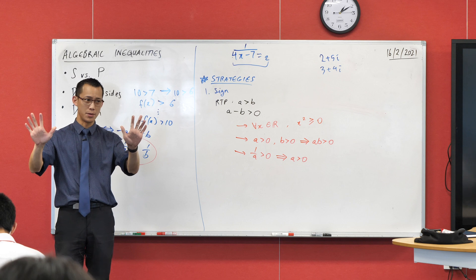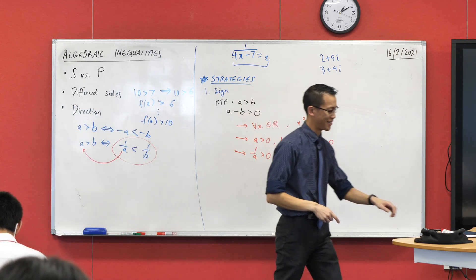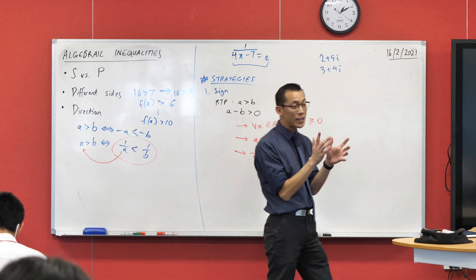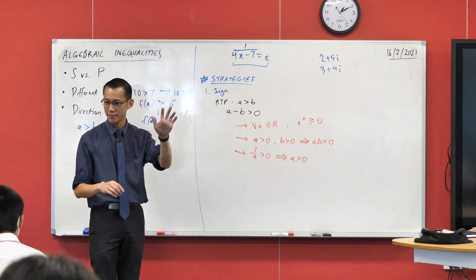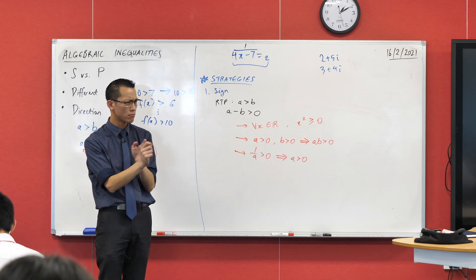The average of two square numbers is always going to be bigger than - make sure I get my inequality in the right direction - it's always going to be bigger than the square of the average of the two numbers you started with. Does that make sense?